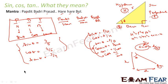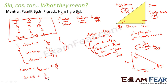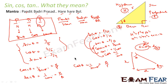So cosec theta is 1 by sin theta, which equals H by P. Sec theta equals 1 by cos theta, which becomes H by B. So what we have learned: sin theta, cos theta, tan theta, cosec theta, sec theta and cot.